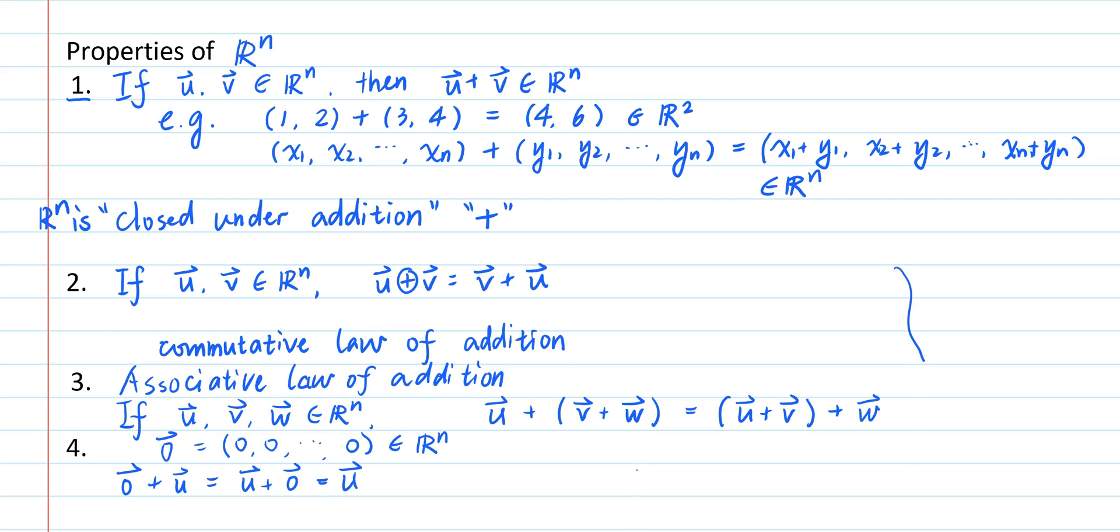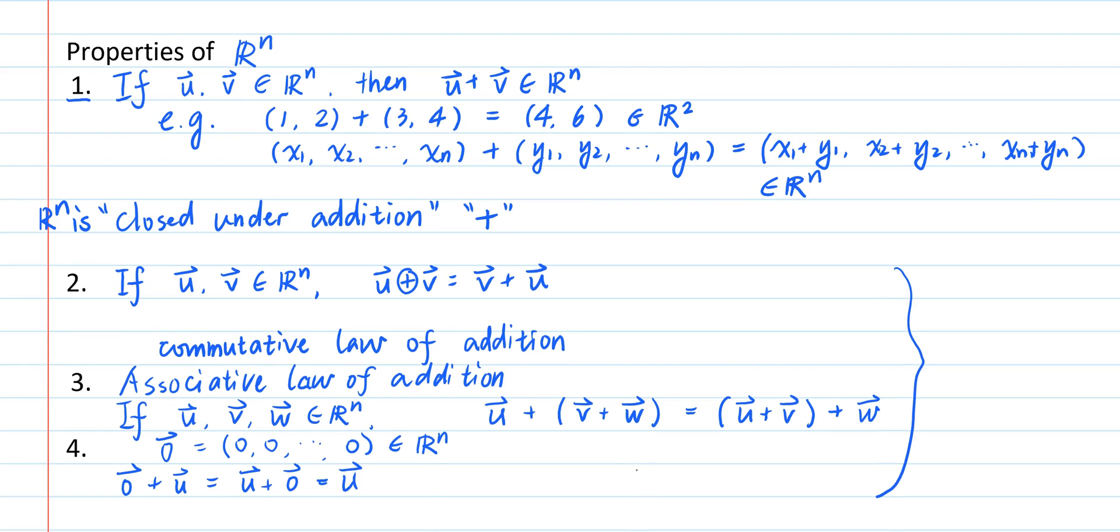These properties are easily verifiable because addition of vectors is defined component-wise, so the commutative and associative law of addition of scalars and the property of the scalar zero just carries over.